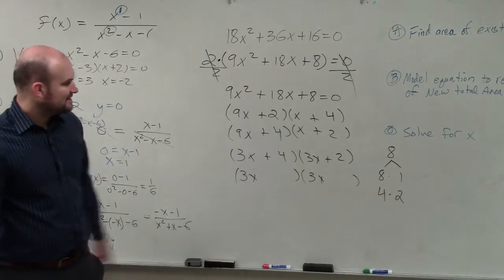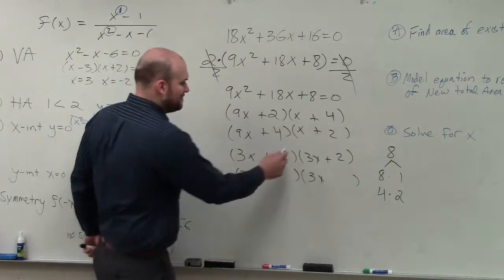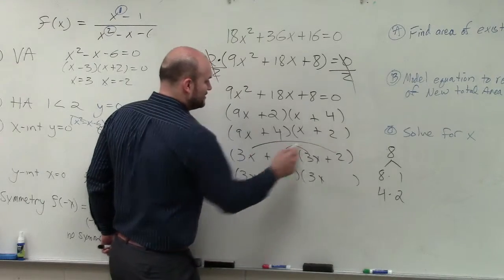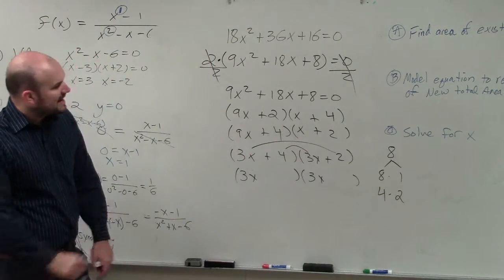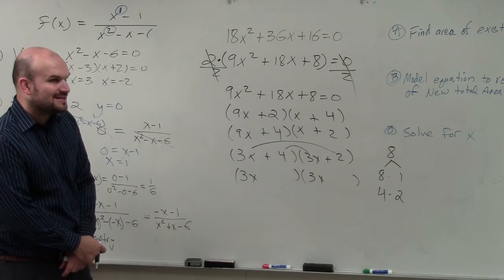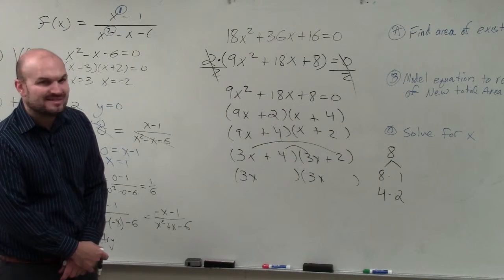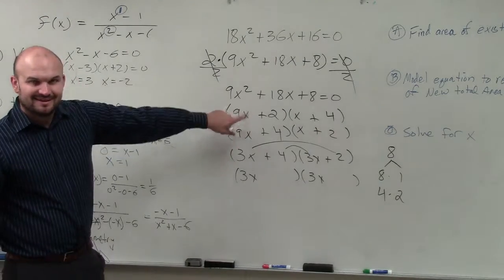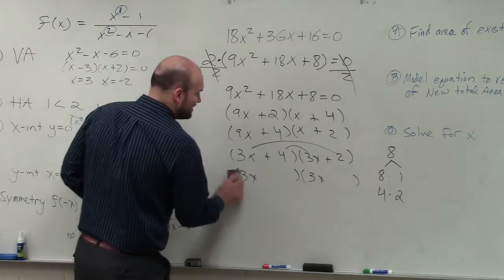And what we notice here is 3x times 2. So if I do my middle and my outer, 3x times 2 is 6x. 4 times 3x is 12x. 12x plus 6x is what? 18x. So guess what? That's my correct answer.